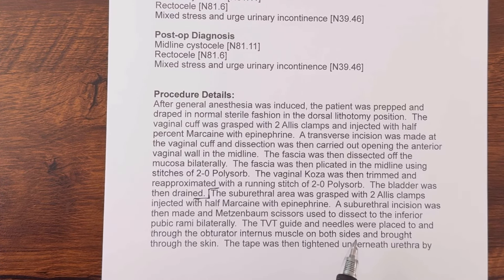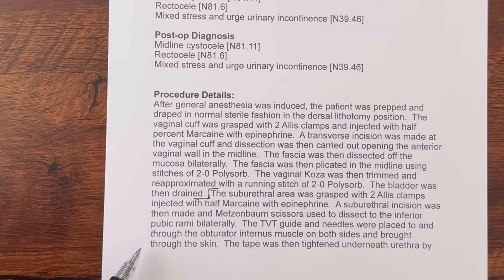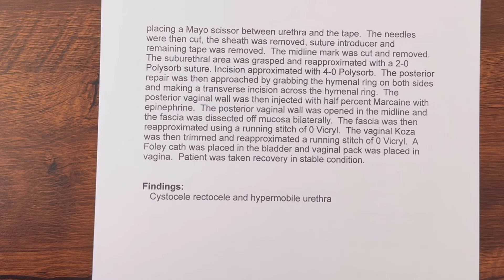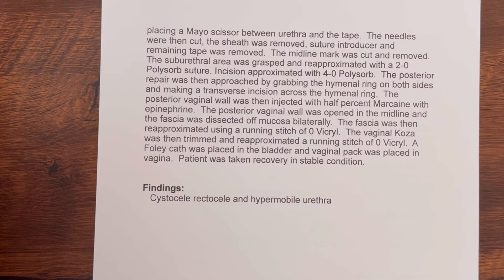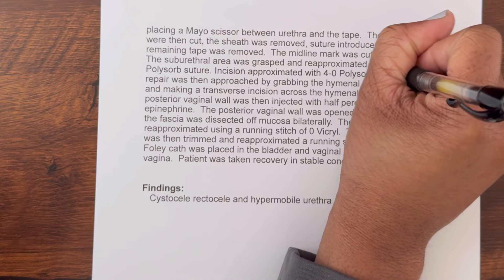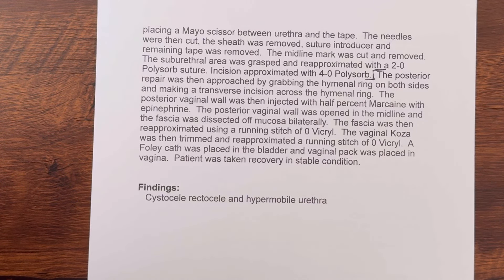The suburethral area was grasped with two Allis clamps and injected with half percent Marcaine with epinephrine. A suburethral incision was then made and Metzenbaum scissors used to dissect to the inferior pubic rami bilaterally. The TVT guide and needles were placed through the obturator internus muscle on both sides and brought through the skin. The tape was then tightened underneath the urethra by placing a Mayo scissor between the urethra and the tape. The needles were then cut, the sheath was removed, the suture introducer and remaining tape were removed, and the midline mark was cut and removed. The suburethral area was re-approximated with a 2-0 Polysorb suture, and the incision approximated with 4-0 Polysorb. The posterior repair was then approached by grabbing the hymenal ring on both sides.